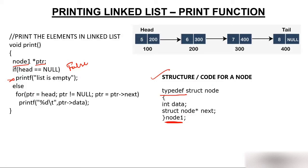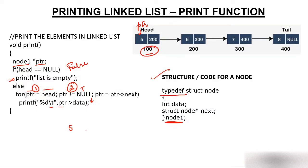Since the condition is false, we go to the else part. In the for loop, we initialize ptr with head, so ptr is now 100 — ptr and head are pointing to the same node. Second part: check if ptr is not equal to null. Ptr is 100, not null, so condition is true. We go to the loop body and print ptr's data, which is 5. A tab gives the space. Then in the increment part, we set ptr = ptr->next, which is 200, so ptr moves to address 200.